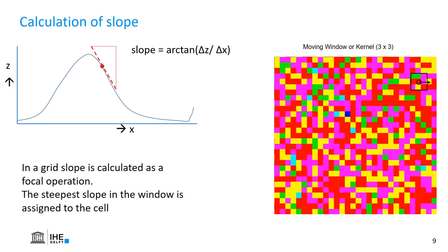Now there's one problem with this method. You can think of what would happen to the first row and column, and the last row and column. There's not enough information to calculate the slope in a kernel or window, and that will result in no data at the borders. So if you want to calculate slopes of a study area, be sure that you make your study area a little bit larger than strictly your area of interest, because otherwise you will lose the borders.